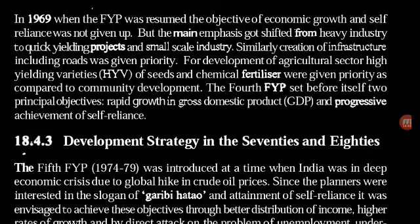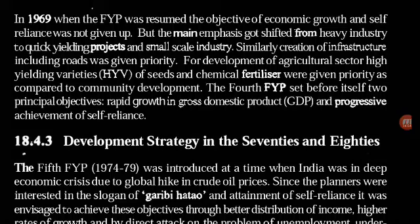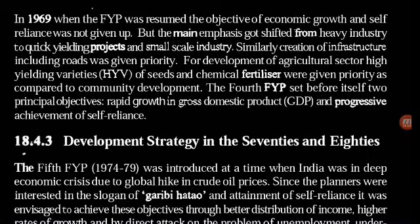For development of the agricultural sector, high-yielding variety seeds and chemical fertilizers were given priority as compared to community development. The fourth FYP set before itself two principal objectives: rapid growth in gross domestic product, and progressive achievement of self-reliance.